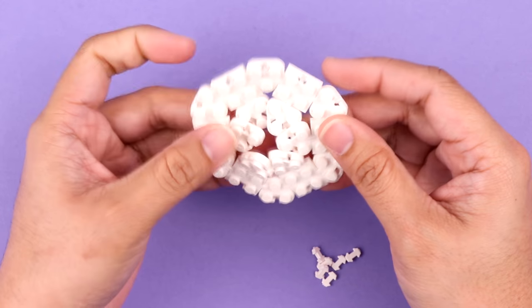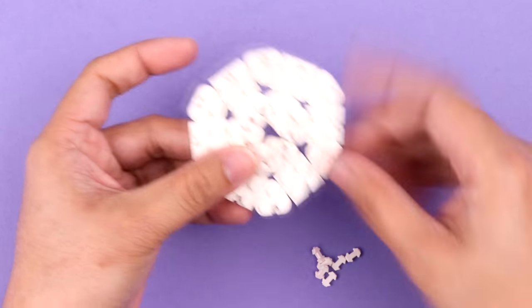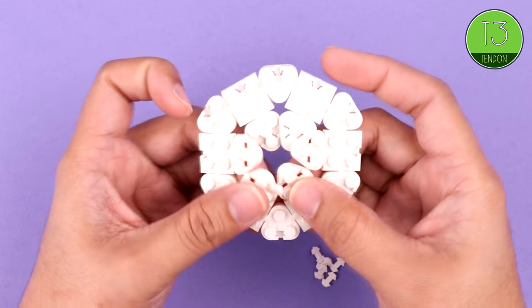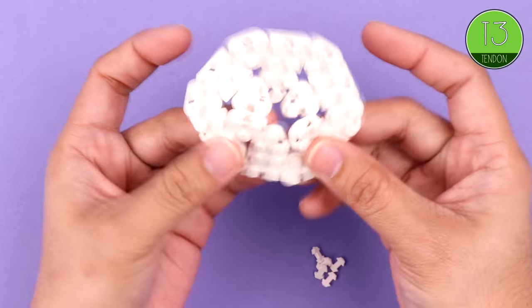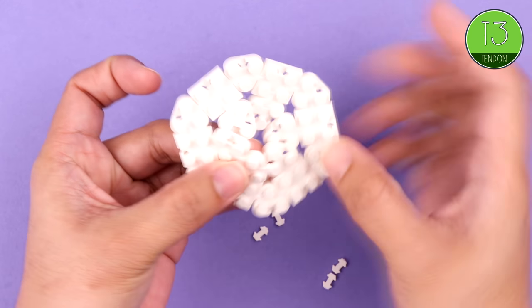And then we want to make sure that we secure the triangles to each other by using more T3 tendons. Just so that we've got a nice sturdy plate for our cake to sit on.